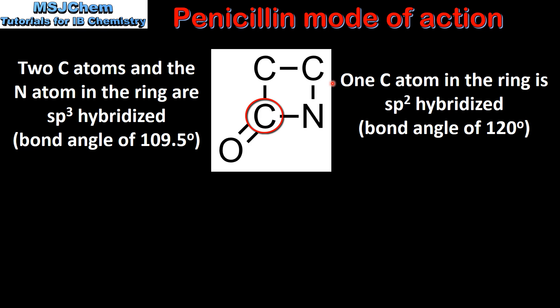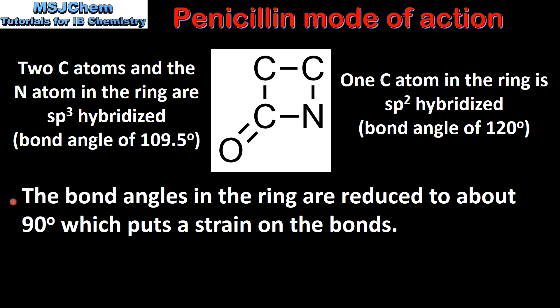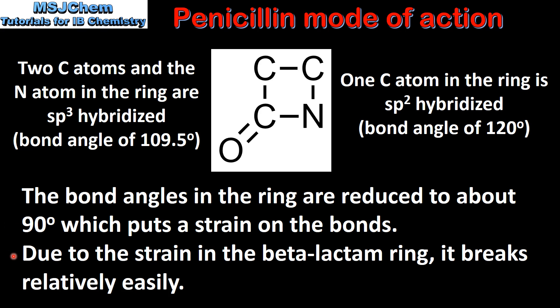One carbon atom in the ring is sp2 hybridized, giving a usual bond angle of 120 degrees. The bond angles in the ring are reduced to about 90 degrees, which puts a strain on the bonds. Due to the strain in the beta-lactam ring, it breaks relatively easily.